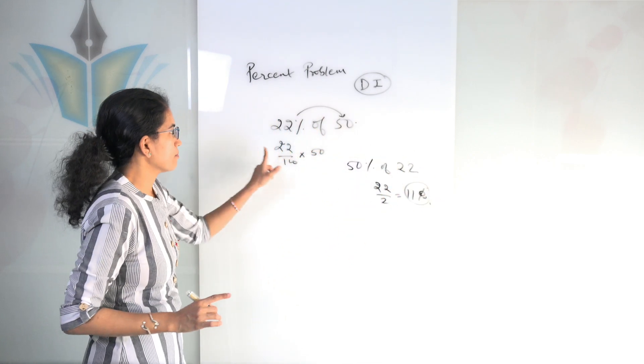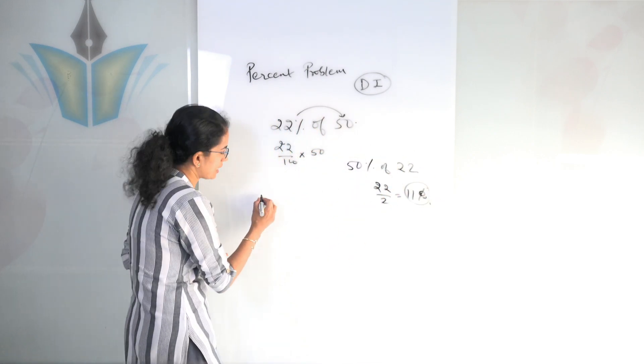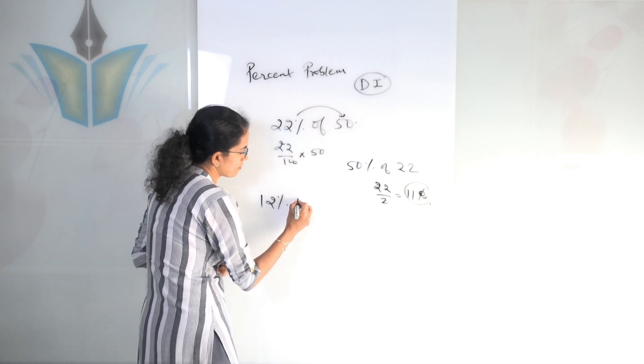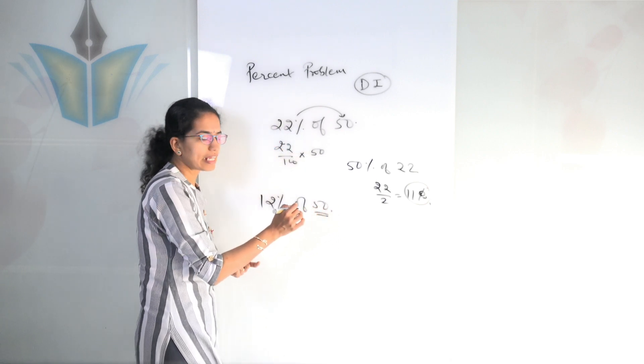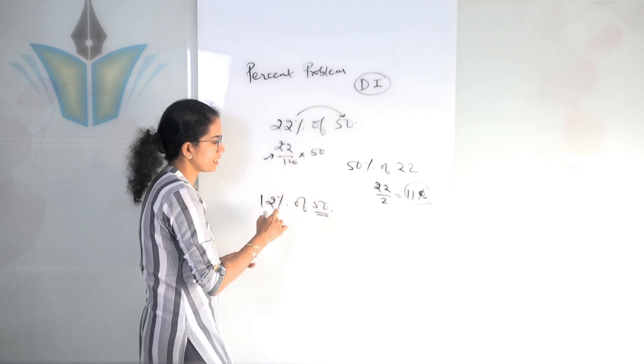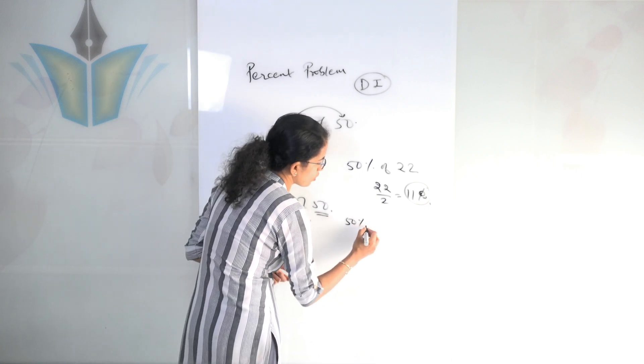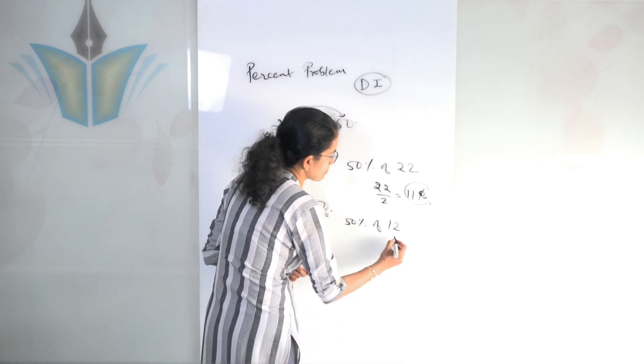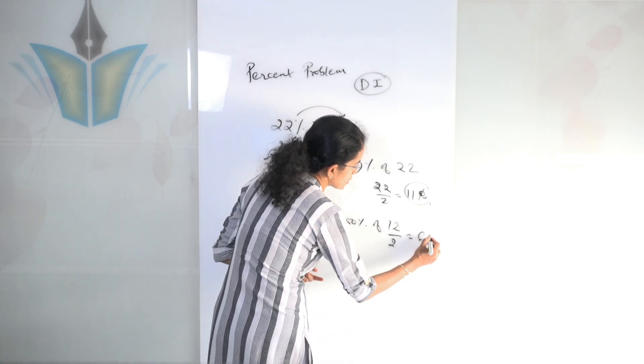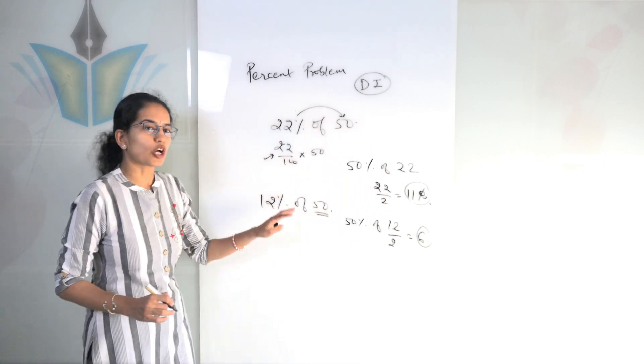Now another important thing. I take another figure, let's say 12% of 50. So rather than finding out 12% of 50 the same way as we mentioned here, I can say 50% of 12. So 50% of 12 means half of 12. That is simply 12 divided by 2, which is 6. Again, it's not just with 50.